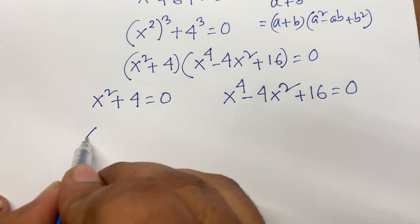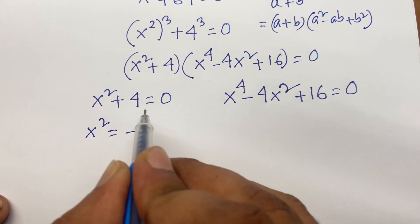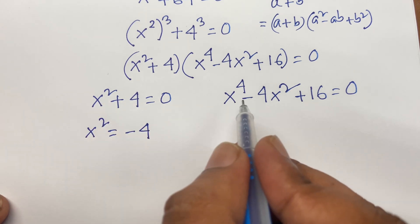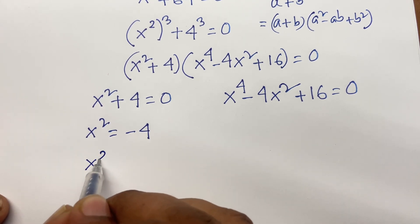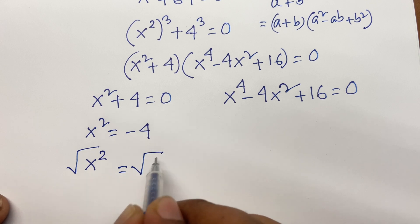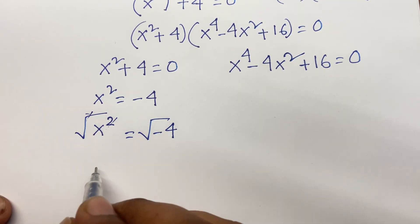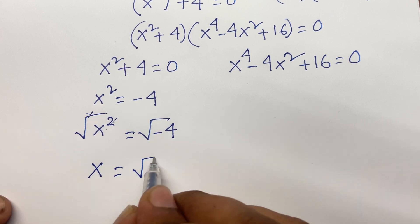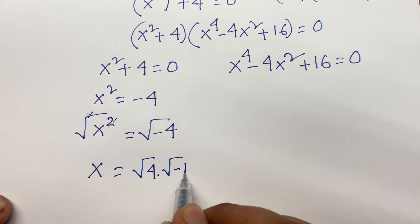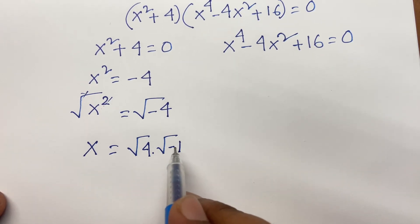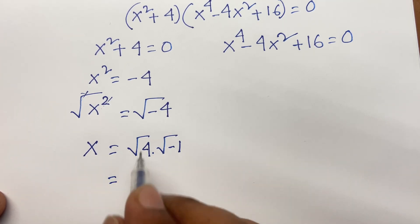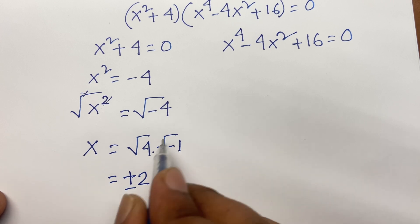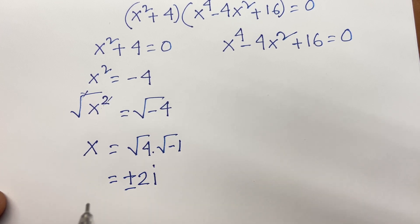From the first factor, x squared is equal to minus 4 — moving positive 4 to the right side. Using square root on both sides, x is equal to the square root of 4 times the square root of minus 1. Since square root of minus 1 is i and square root of 4 is 2, we get x is equal to plus or minus 2i.